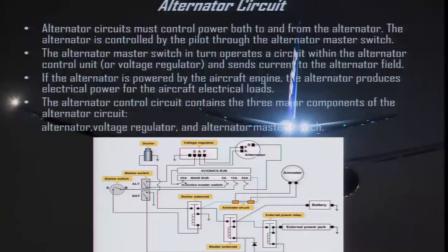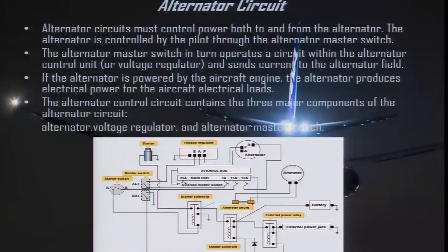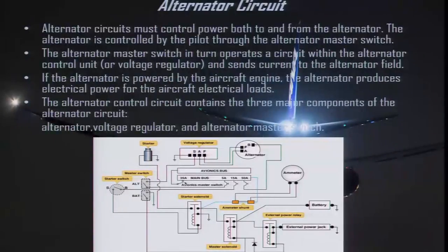Next is the alternator circuit. In this diagram it is almost the same as the last diagram — battery with negative terminal to ground, positive terminal connected to the master solenoid or battery solenoid, starter solenoid, ammeter, starter switch, and master switch. The master switch has two parts: one is the battery and another is the alternator. You also have a voltage regulator, main bus, and one avionics bus. Alternator circuits must control power both to and from the alternator.